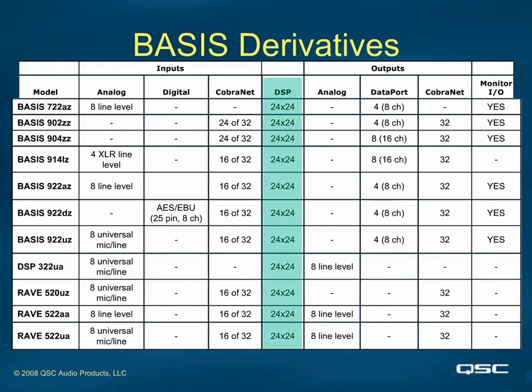Notice the middle column — all of the units, no matter what the model designation or IO capability, use the exact same DSP engine circuitry. This allowed us to use common parts and circuit board design layouts for all of the units, without having to design, build, and stock different circuit boards for different models. This kept our costs and therefore your costs down.